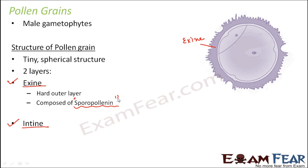Sporopollenin is a polymer — you would have studied about polymers in chemistry. It constitutes the outer wall of spores and pollen grains, and that is why the name is sporopollenin, because it generally makes up the outer wall of spores and pollen grains. It is highly resistant, and that is why it serves extremely well as an outer layer.